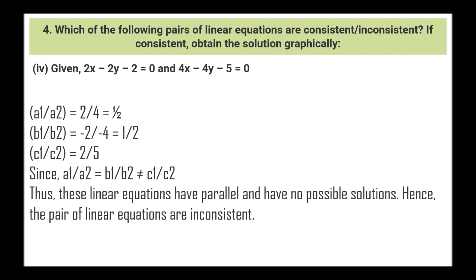Next: 2x - 2y - 2 = 0 and 4x - 4y - 5 = 0. a1/a2 = 2/4 = 1/2, b1/b2 = -2/-4 = 1/2, and c1/c2 = 2/5. Here a1/a2 = b1/b2 but not equal to c1/c2. Thus these linear equations are parallel and have no possible solutions, and the pairs of linear equations are inconsistent.